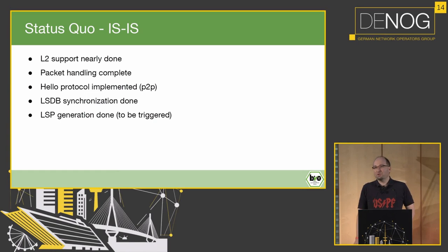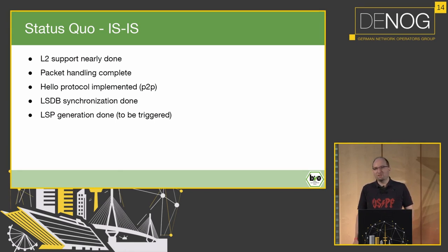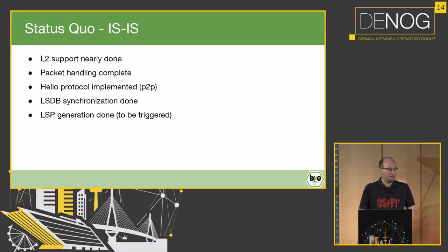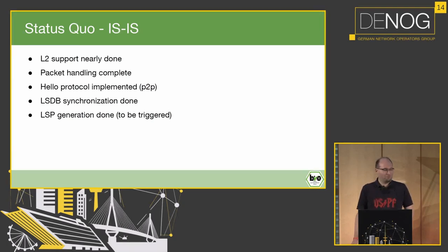ISIS — the I in bio — is in the works too; that's mainly Oliver's work. Support for level 2 in ISIS is nearly done. The packet handling, serialization and deserialization, is complete including a lot of tests. The hello protocol to form adjacencies is implemented. The synchronization between routers is basically there — the only thing missing is the LSPs for ourselves to be sent out, so it's nearly ready. Maybe it will be a Christmas gift since there is no Congress.